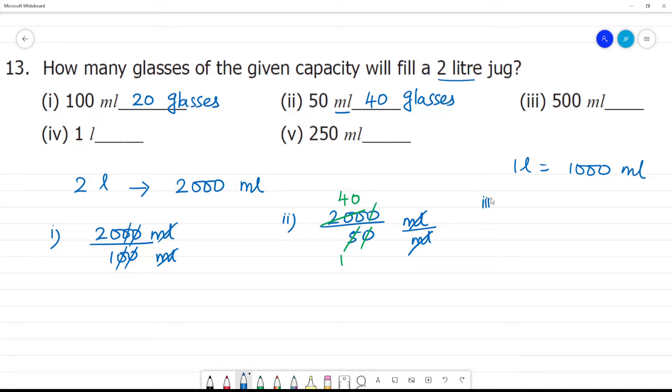Third one is 500 ml. 2,000 divided by 500. Cancel the zeros. 5 goes into 20 four times. So this is 4 glasses.